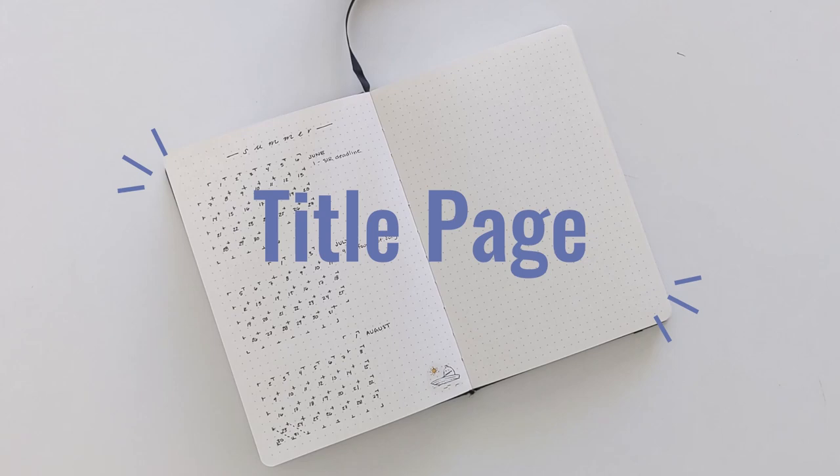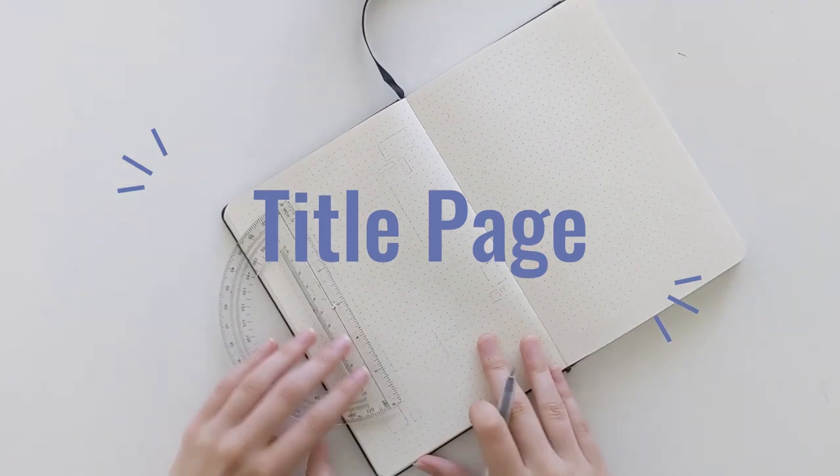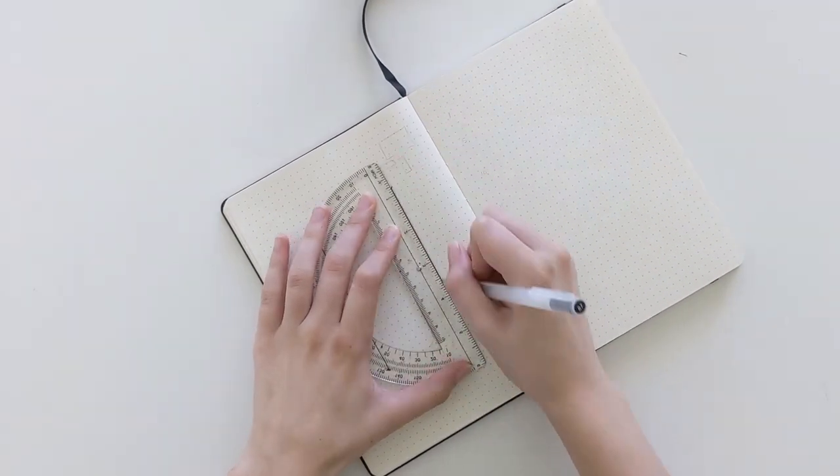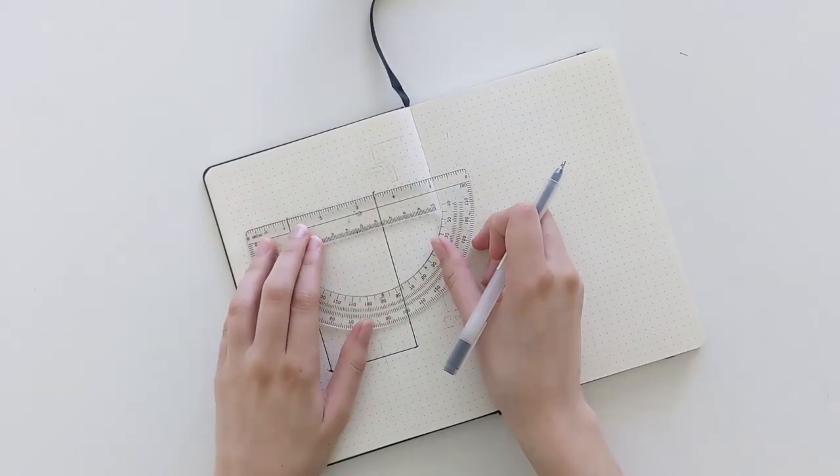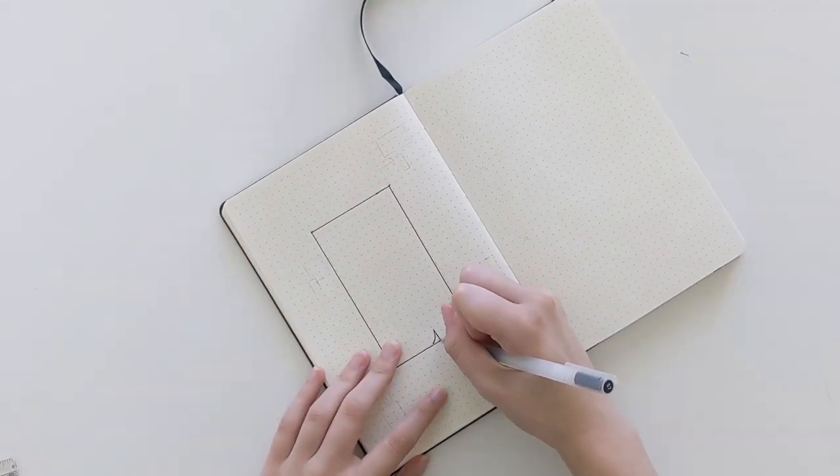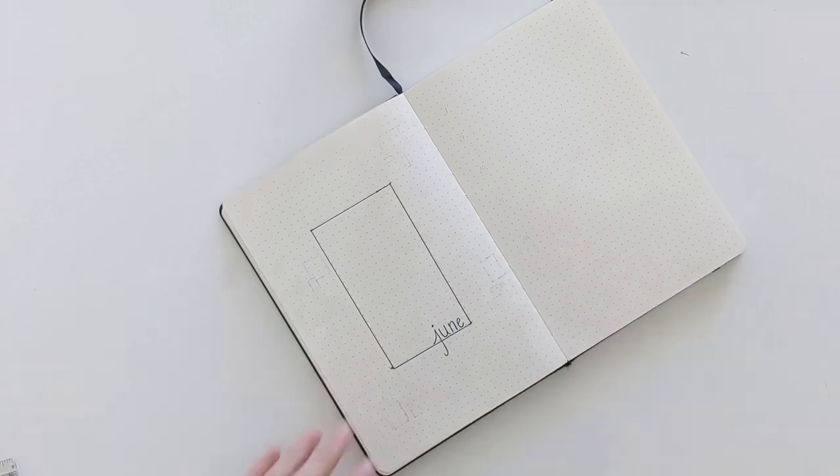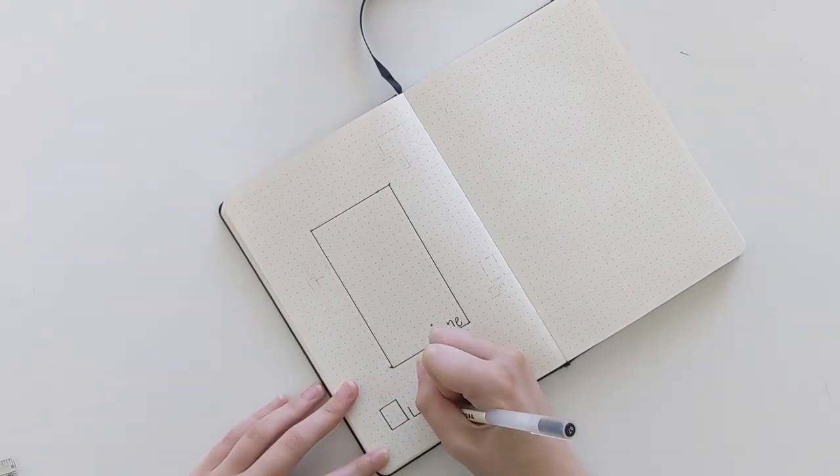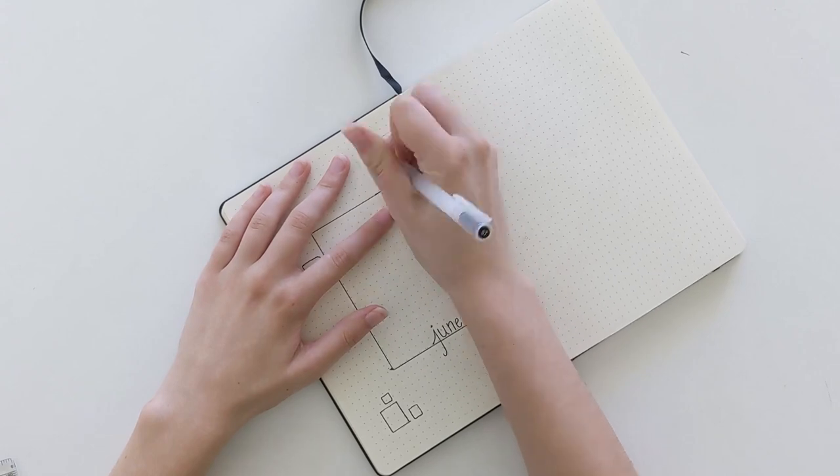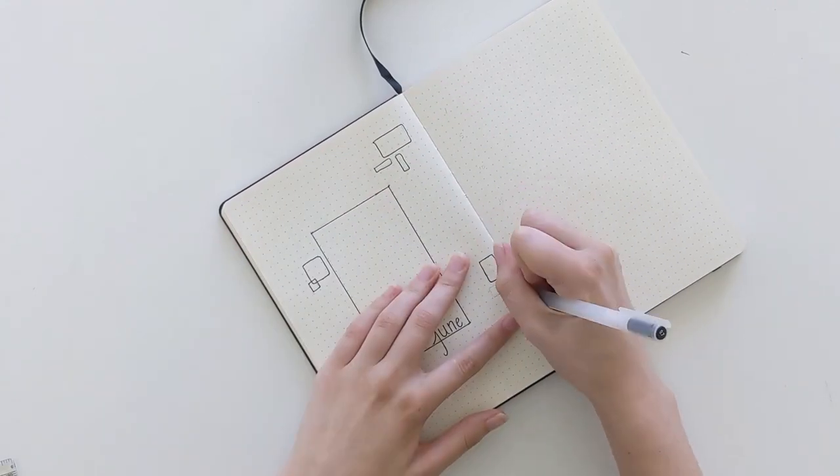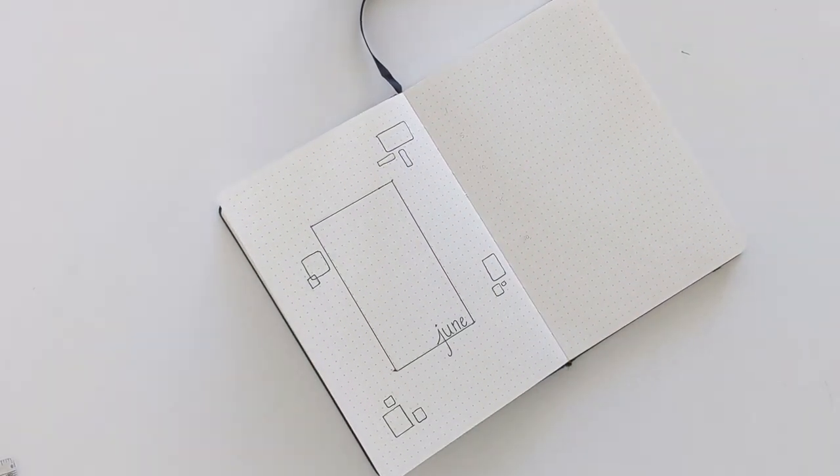Every time I start a new section of my notebook, I like to use a title page. This helps me mark different months or years. Your title page can be as simple as the name of the month, or as complex as a collage or drawing that you spend a lot of time on. I'm going to make a title page for June, since that's what month it is. However, you can make a title page for the whole year, or with your name if you're just starting your notebook.